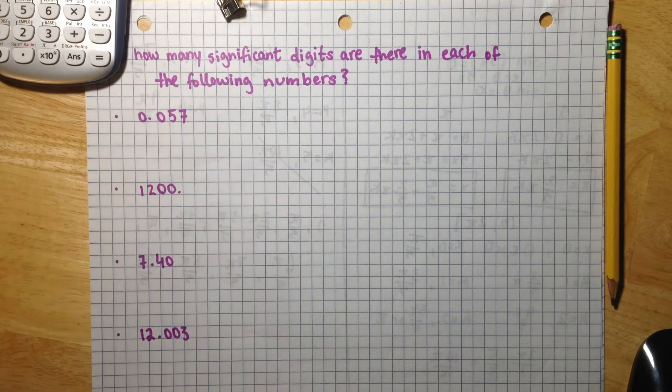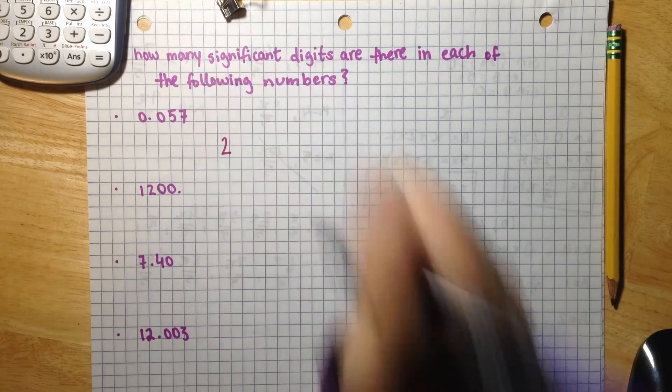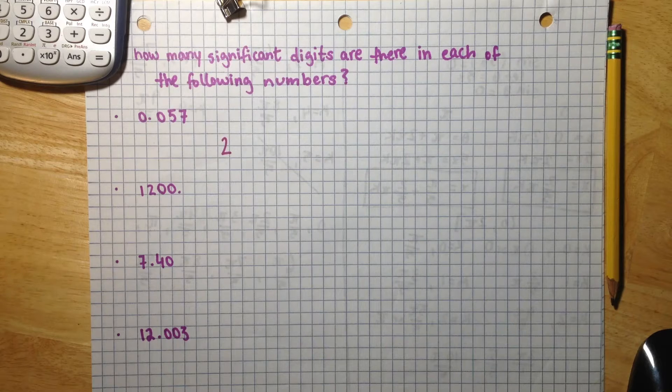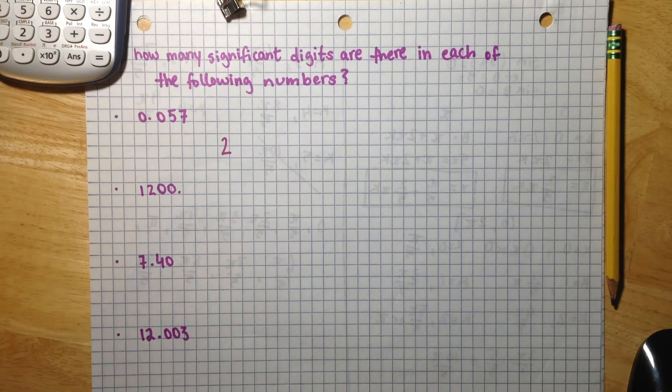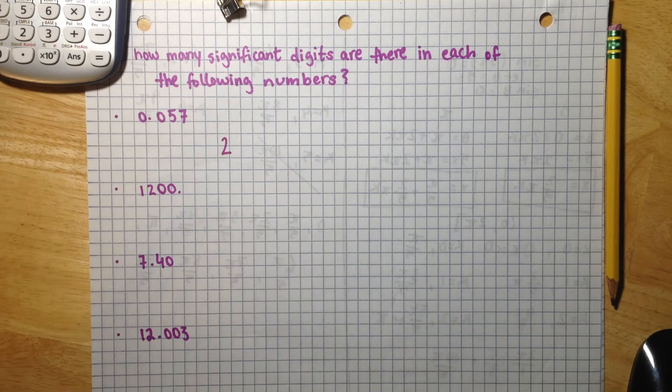So this number has two significant figures because the rule for significant figures with zeros is that you are to ignore all leading zeros and all trailing zeros.